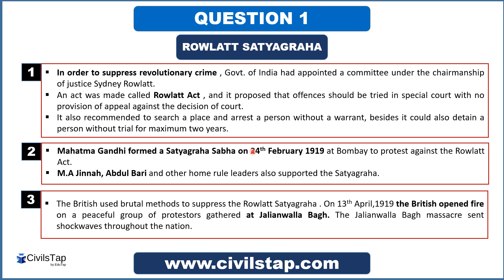Now we will read more about Rowlett Satyagraha. The Rowlett Act came about in 1919. The government had appointed a committee under the chairmanship of Justice Sydney Rowlett. This committee was known as the Sedition Committee. This committee built an act known as the Rowlett Act, which proposed that offenses by revolutionaries should be tried in a special court where there would be no provision of appeal against the court's decision.